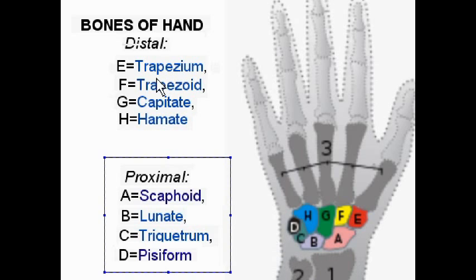Second row, EFGH. Starting from the right, going left: trapezium, trapezoid, capitate, hamate.